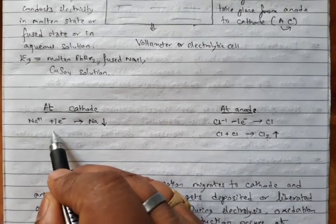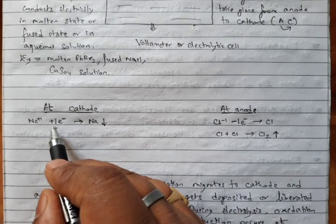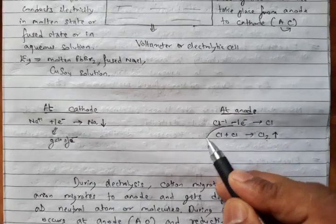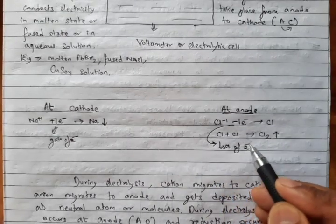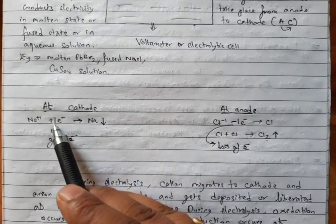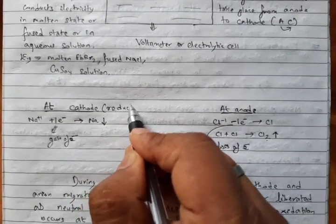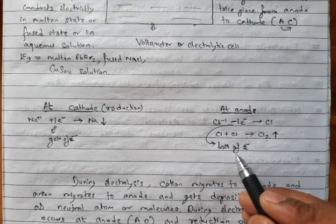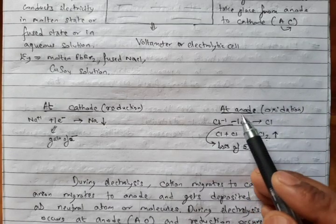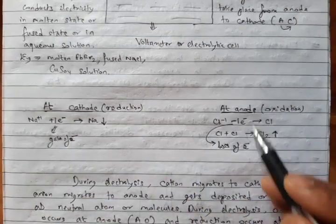During electrolysis, oxidation occurs at anode and reduction occurs at cathode. Why reduction at cathode? Due to gain of electron. Why oxidation at anode? Due to loss of electron. To remember which is which, use the mnemonic AO — A O means anode oxidation. Therefore cathode must be reduction. So: anode = oxidation, cathode = reduction.